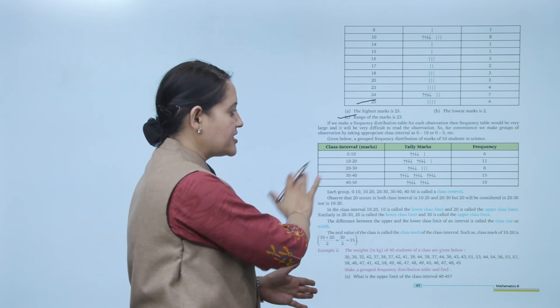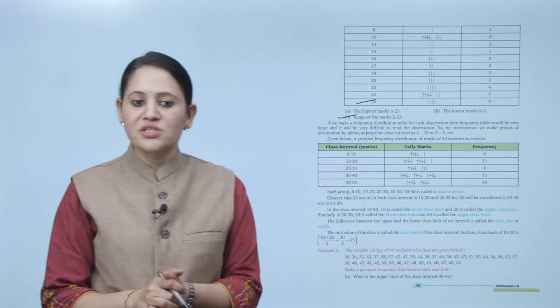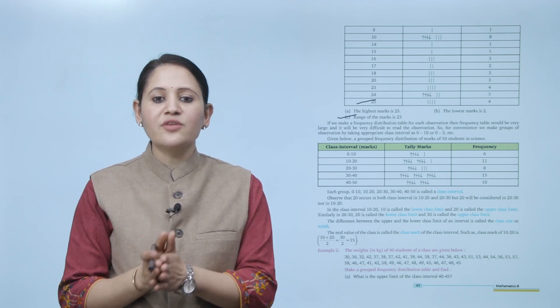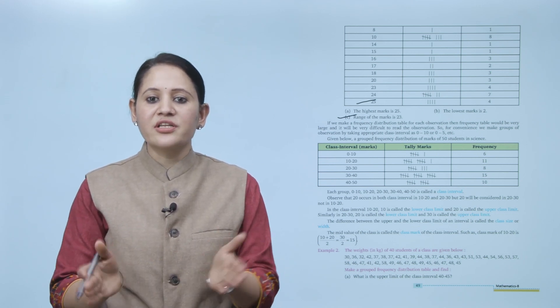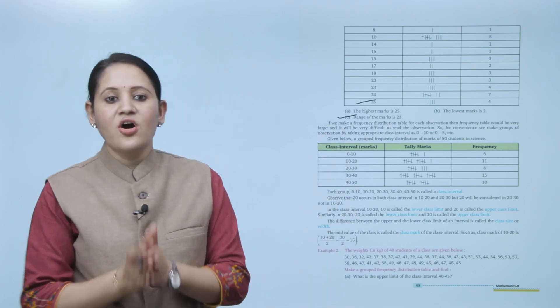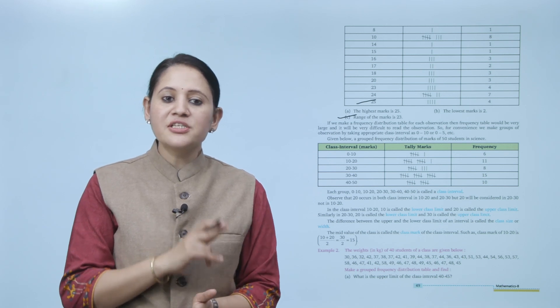Class intervals are 10 to 20, 20 to 30, 30 to 40, 40 to 50. We make a frequency distribution table for each group: 0–10, 10–20, 20–30, 30–40, 40–50. These groups are called class intervals. Note that 20 occurs in both class intervals 10–20 and 20–30, but 20 will be included in 20–30, not in 10–20.